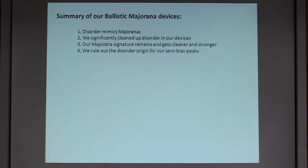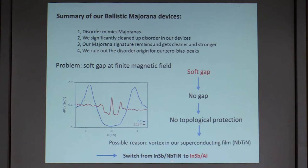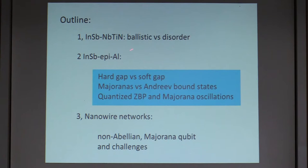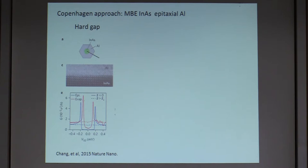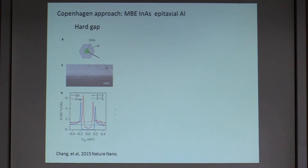That's why we switched from niobium titanium nitride to aluminum as our superconductor, because aluminum is a type-1 superconductor with no vortices — it should give a hard gap even when you have zero-bias peaks. Aluminum was first used by the Copenhagen group — Charlie Marcus's group and Peter Krogstrup. They grew indium-arsenide nanowires in an MBE chamber and, without breaking the vacuum, directly deposited aluminum on top. This avoided the surface oxide problem entirely, resulting in an atomically flat interface between aluminum and the nanowire.